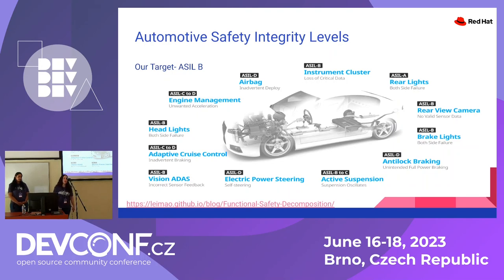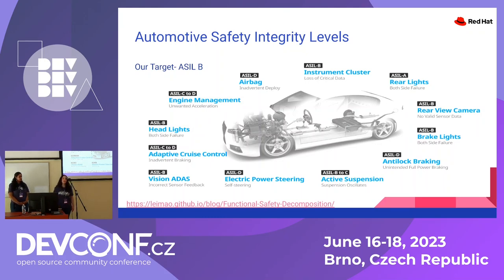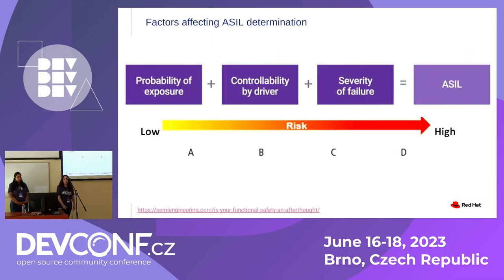You might hear the term ASIL a lot throughout the talk. ASIL stands for Automotive Safety Integrity Levels — A being the lowest level up through D, which is the highest level of a hazard. ASIL A would be something like your rear light, which is very unlikely to cause somebody to be in an accident. Where you look at something like ASIL D, which is the airbags failing to deploy. For us, we're certifying against ASIL B. ASILs are determined by three factors: probability of exposure, controllability by the driver, and the severity of the failure.